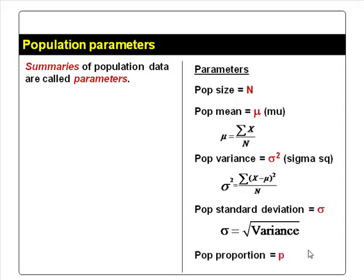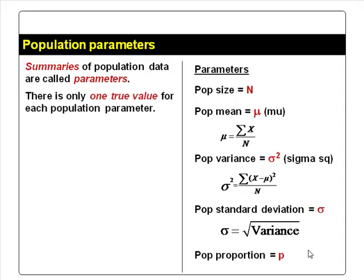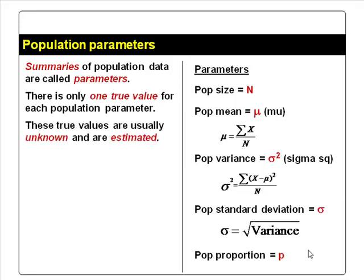Population proportion is denoted by p. There is only one true value for each of these parameters. But most of these true values are usually unknown and can be estimated using sample data. We will talk about what a sample and sample data are in later slides.